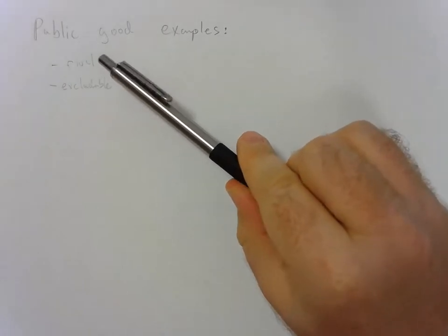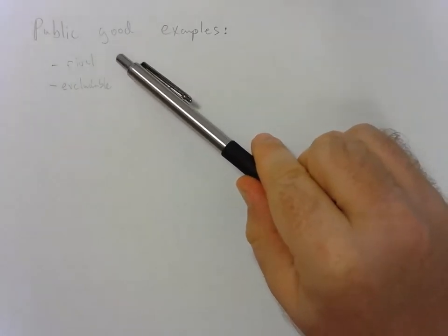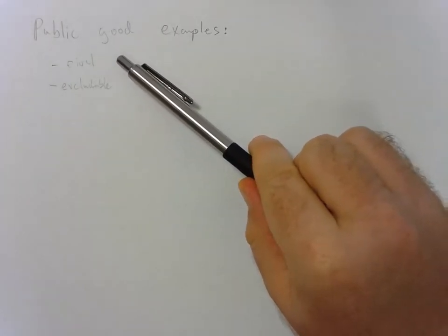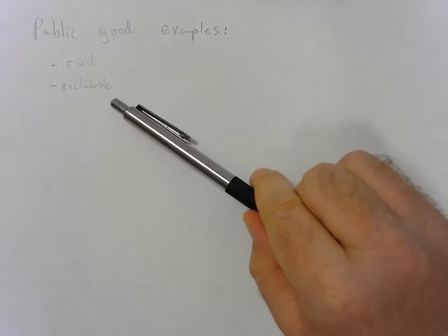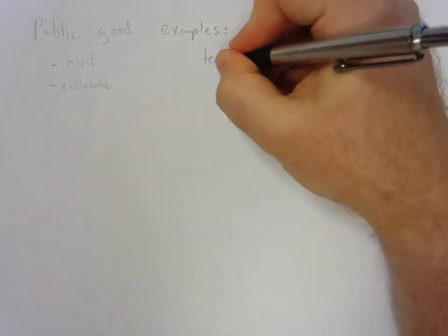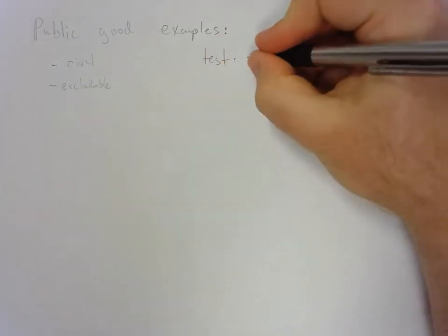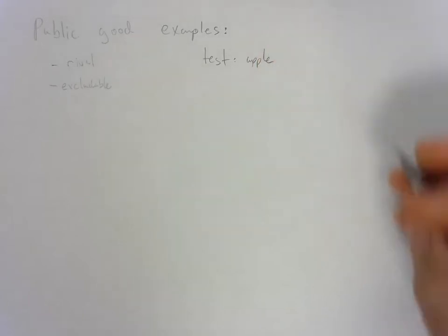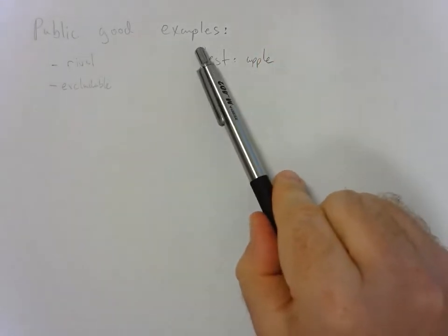So rival means that if one person consumes the good, it affects another person's ability to consume that good. And excludable means are you able to exclude people from consuming the good or not? So we can test a bunch of different goods to see if they pass this public good example test or not.